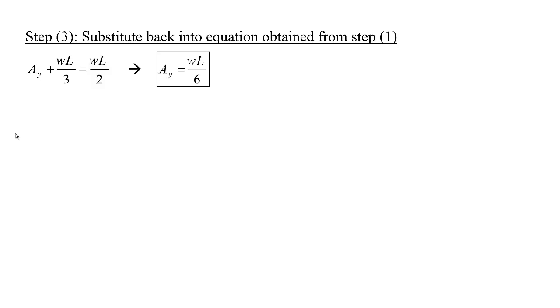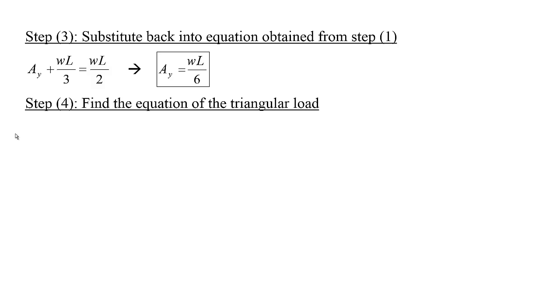The next step is to find the equation of the triangular load. We have this triangular load represented by a straight line, so we need to find the equation of this straight line. Since it's a straight line, it follows that Y equals MX plus B. But Y in our case is WX, so the general equation of the line is WX equals MX plus B. We have two points: X equals 0 with W equals 0, and X at L with W equals W.